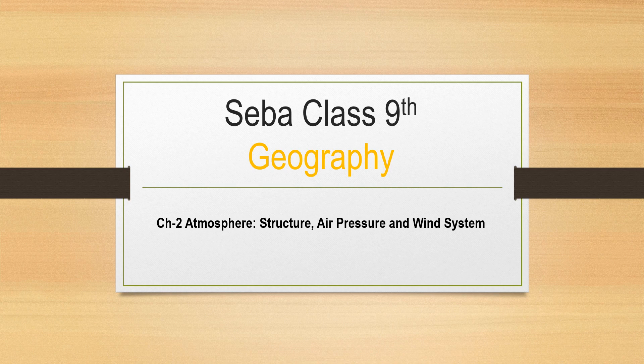Hello and welcome to history classes. This is class 9th Seba Geography textbook and we are doing chapter number 2, Atmosphere, Structure, Air Pressure and Wind System. Aaj ham parhenge wind system kaise generate hota hai, kaise wind generate hota hai due to different types of forces.